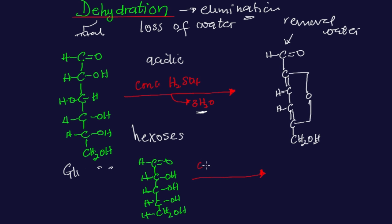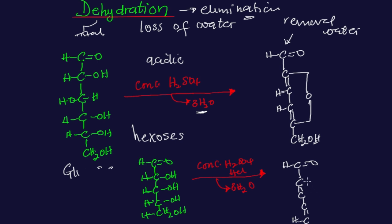Whenever this type of pentose sugar undergoes the dehydration reaction — that is whenever it is treated with concentrated HCl or concentrated H₂SO₄ — there is always loss of three molecules of water. Whenever there is loss of three molecules of water in this case, the product formed is furfural. It is basically furfural because it doesn't have any hydroxymethyl group in its structure. The product has a single bond to carbon, a double bond to another carbon, with oxygen bridging and hydrogen atoms completing the ring.